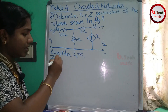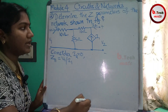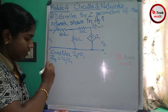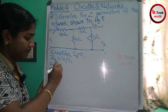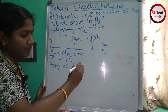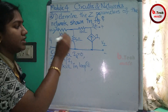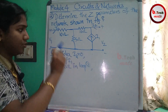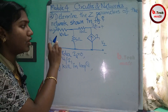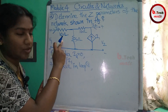With I1 equal to 0, in the first loop we apply mesh analysis. Apply KVL in loop 1.